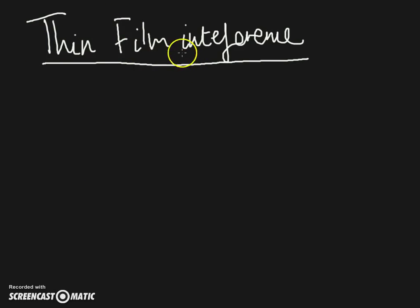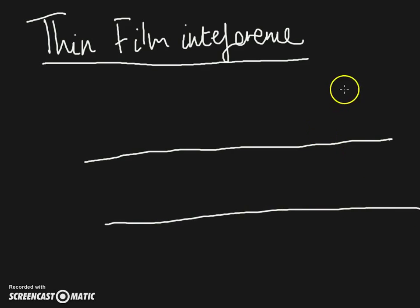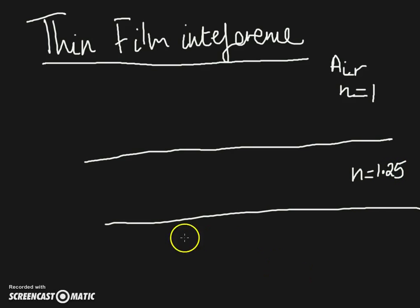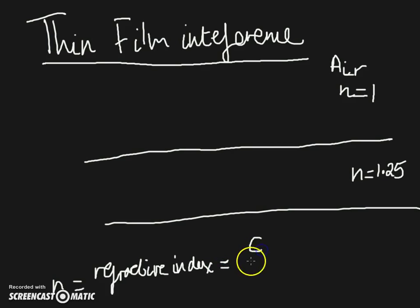Essentially, it's the same as normal interference, except it occurs at a boundary. So this is our boundary. This is air, and it has an n value of 1. This has an n value of 2. Remember, n is just refractive index. That's equal to the speed of light divided by the velocity of a wave in medium 1.